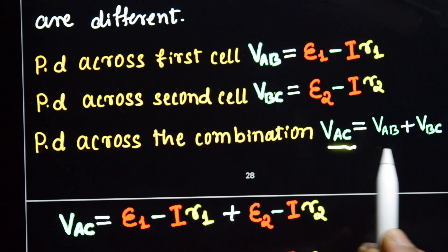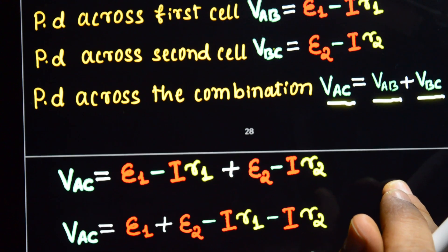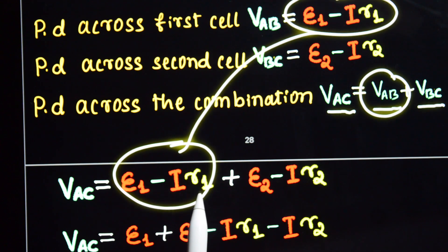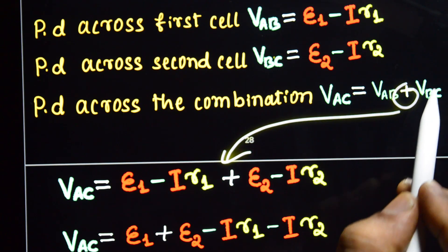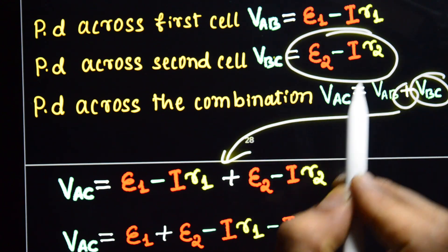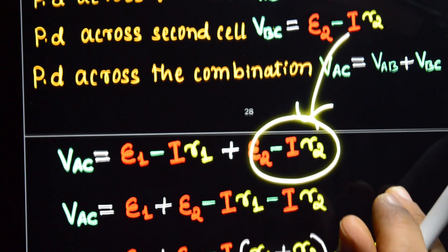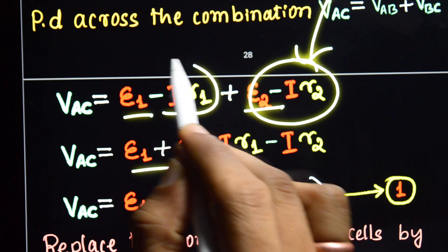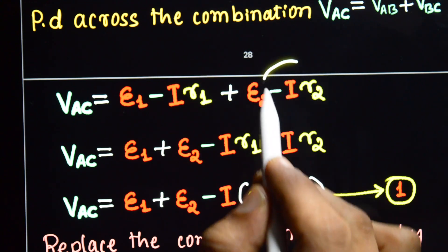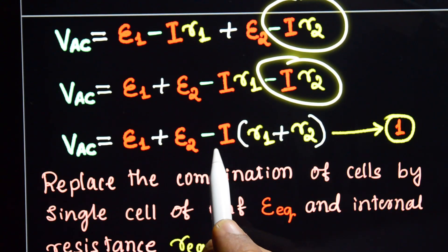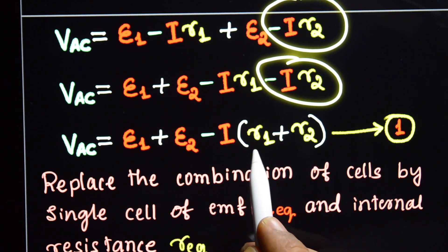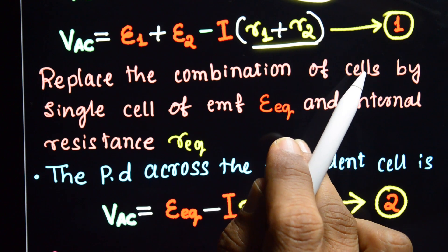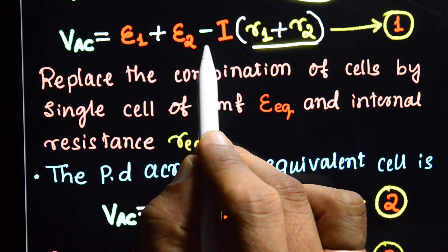Substituting: VAC equals VAB plus VBC equals (E1 minus I·R1) plus (E2 minus I·R2). Arranging this gives: E1 plus E2 minus I·R1 minus I·R2, which simplifies to VAC equals E1 plus E2 minus I into (R1 plus R2). This is equation number one.